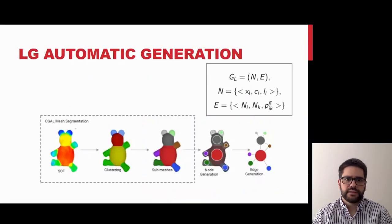The liquid graph is defined as a set of edges and nodes. Each node stores its position, capacity, and amount of liquid inside. On the other hand, each edge stores the two nodes which are connected to, and a permeability constant. This graph can be created manually by the artist or automatically.